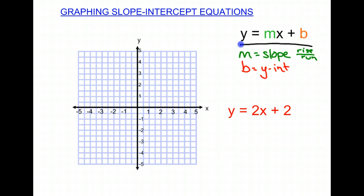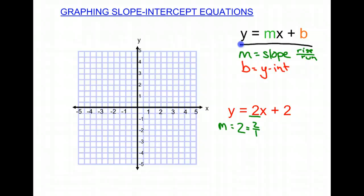So we have an equation: y equals 2x plus 2. Our slope m is going to be 2, which we can rewrite as 2 over 1. So we have our rise, which is 2, and our run, which is 1. Then our y-intercept is going to be 2 as well, so our point for the y-intercept is x equals 0, y equals 2.